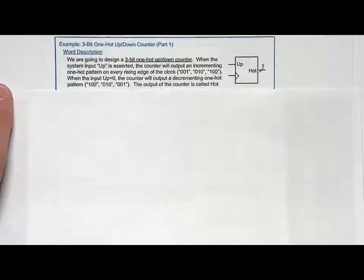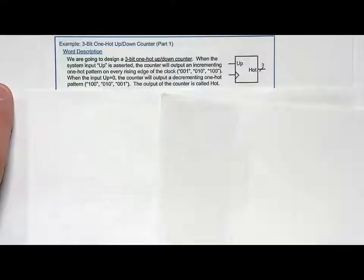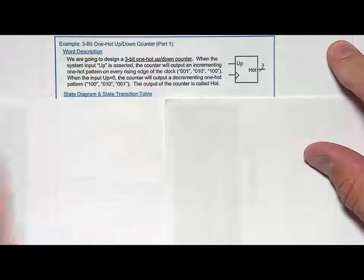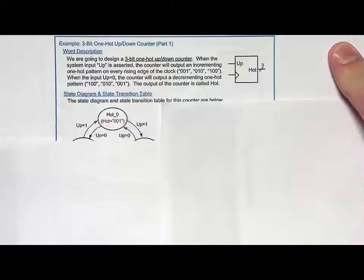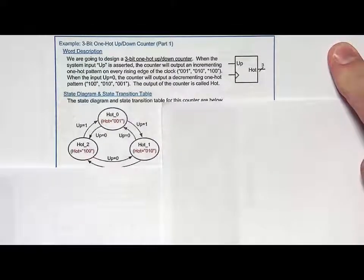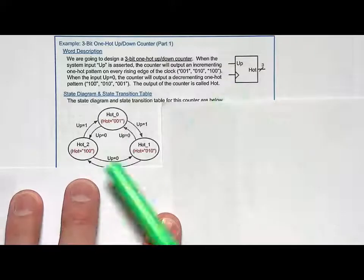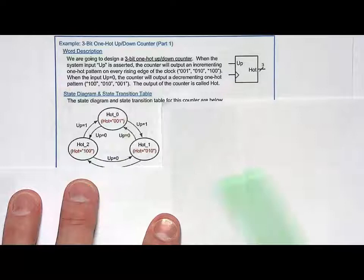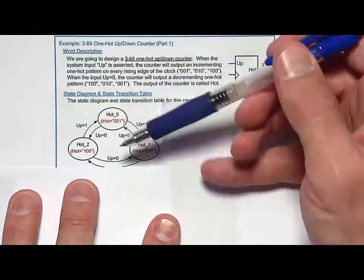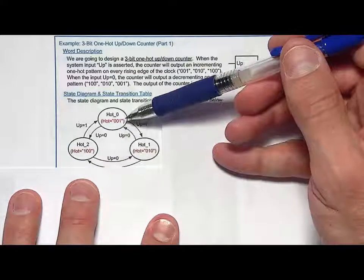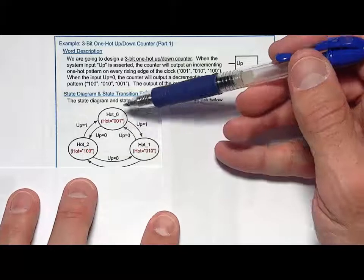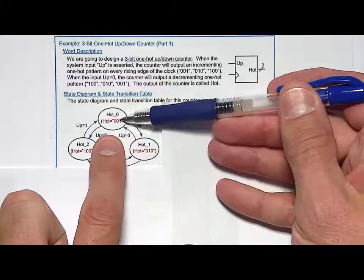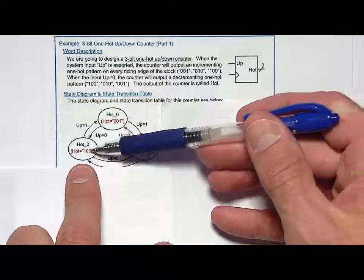Let's go ahead and take advantage of the counter design approach. With the state diagram, we will make a state for each output. So we'll call it hot zero, hot one, hot two, representing the three outputs that we're going to have. Then each output will have an output that produces what we want. So we'll say that hot, the output in this state, is going to be 001, 010, 100.